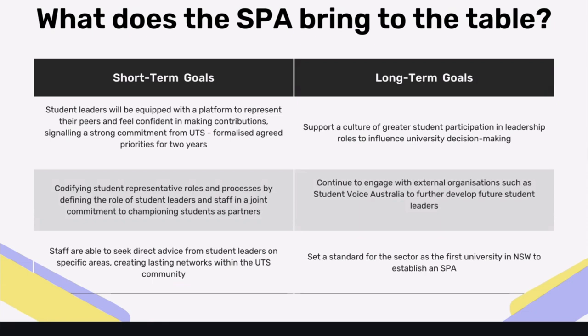These priorities include things like implementing a sexual assault and harassment response following the National Student Safety Survey — we actually wrote a UTS SASH policy that is now codified within UTS governance. We put things in there like recognizing the right for the student association to run campaigns and protests on campus, because we'd had issues in the past where demonstrations were interrupted. We also addressed sustainability on campus and the university working towards climate goals — just so you have a better understanding of what mutual priorities actually mean.